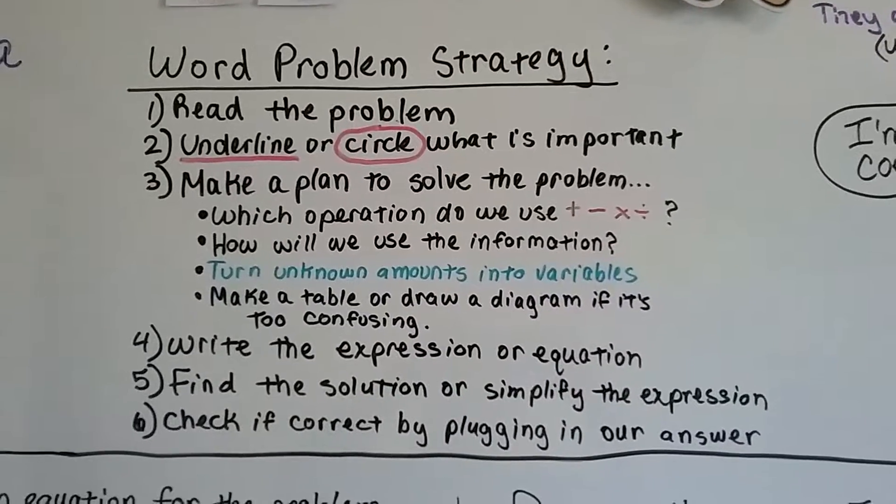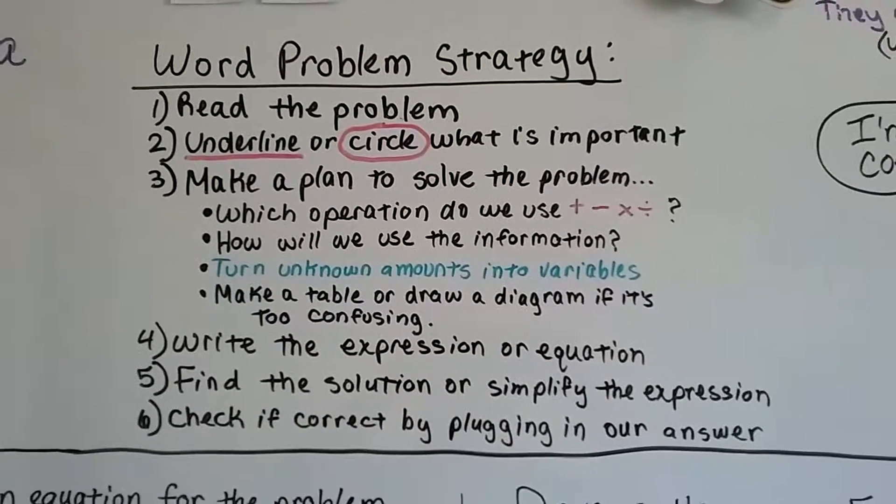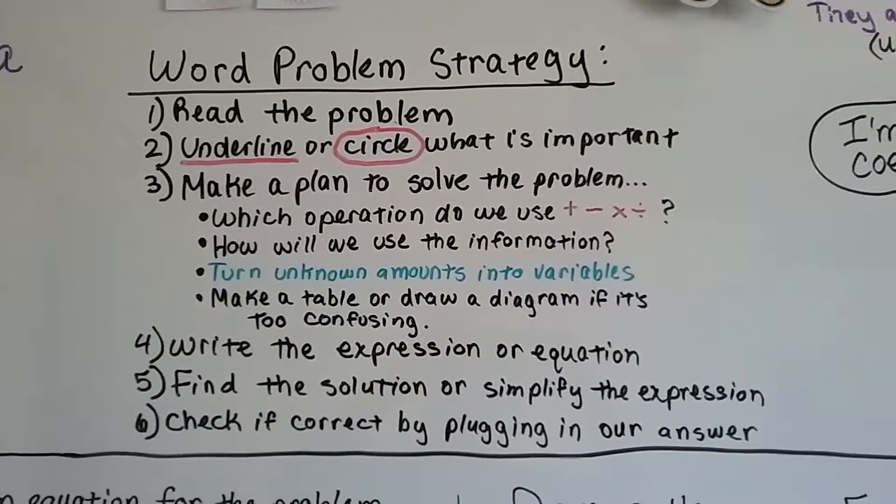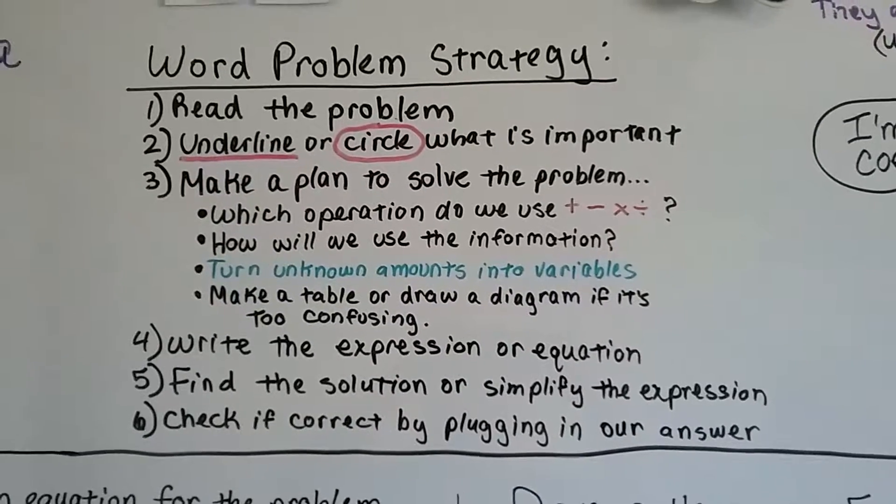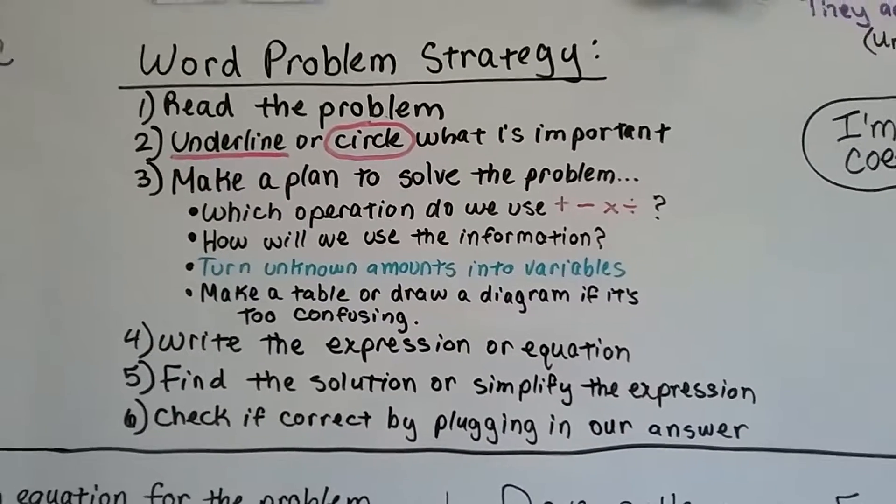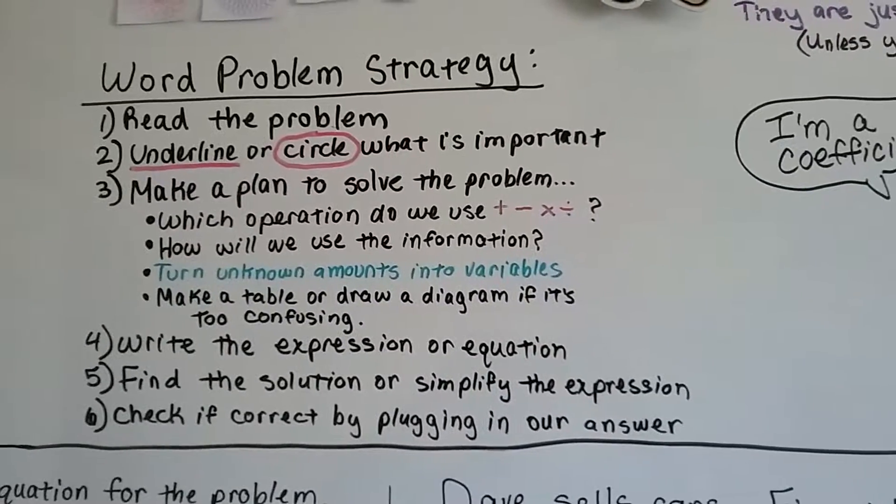Figure out which operation we're going to use - add, subtract, multiply, divide - and how we'll use the information and turn unknown amounts into variables. We'll make a table or draw a diagram if it's too confusing, then write the expression or equation, find the solution or simplify it, and check if it's correct by plugging in our answer.